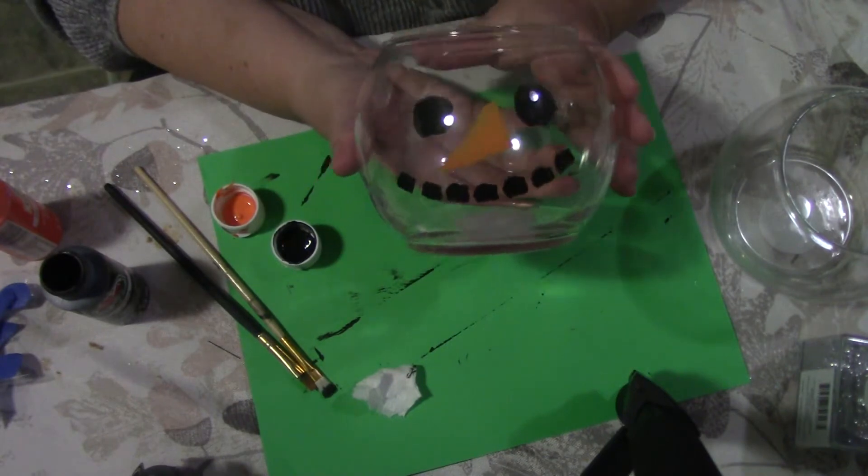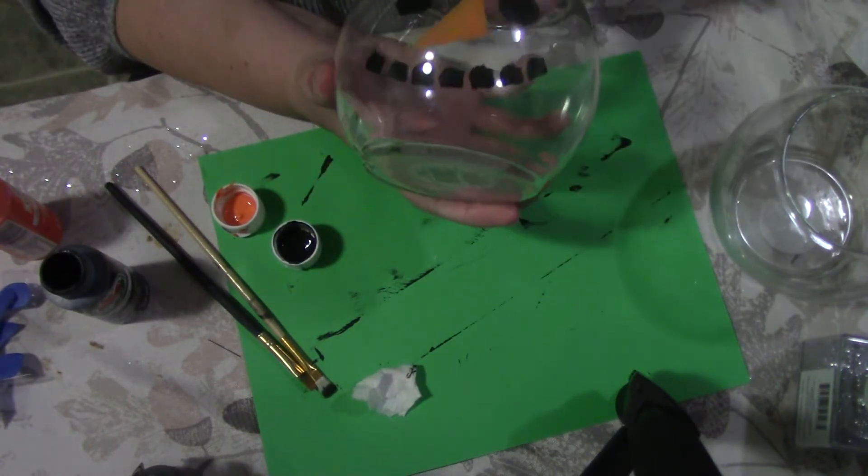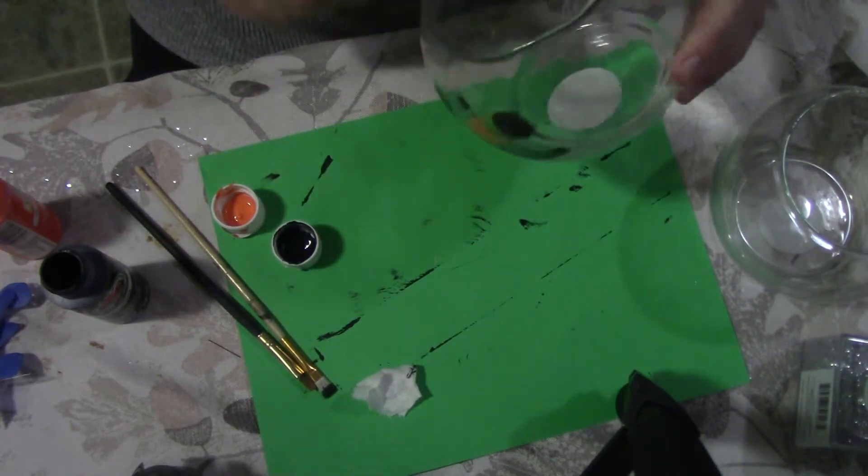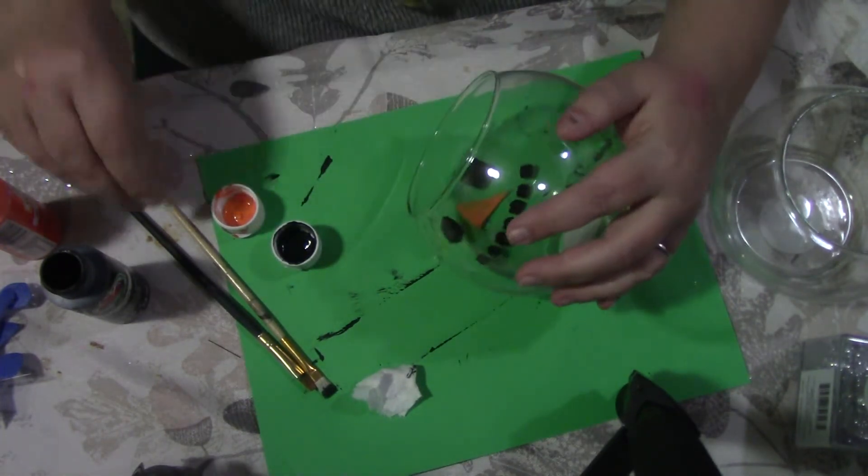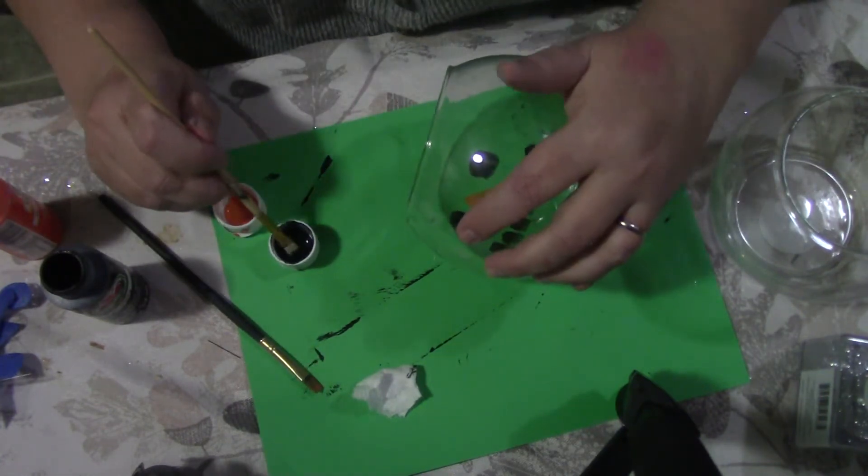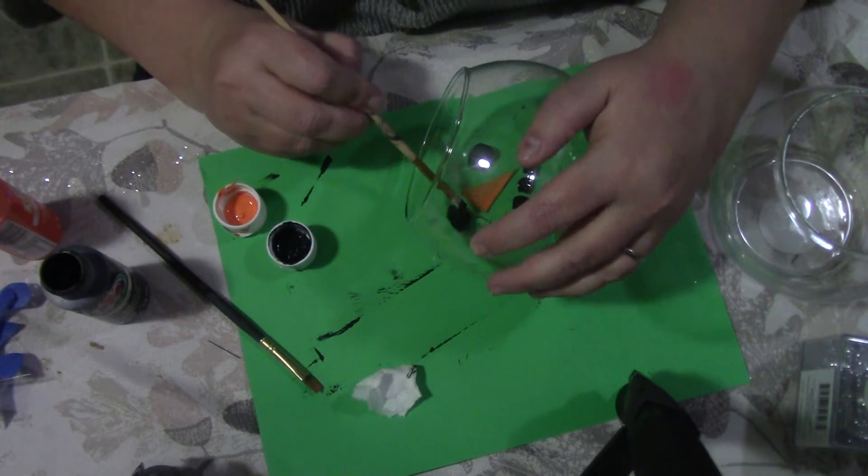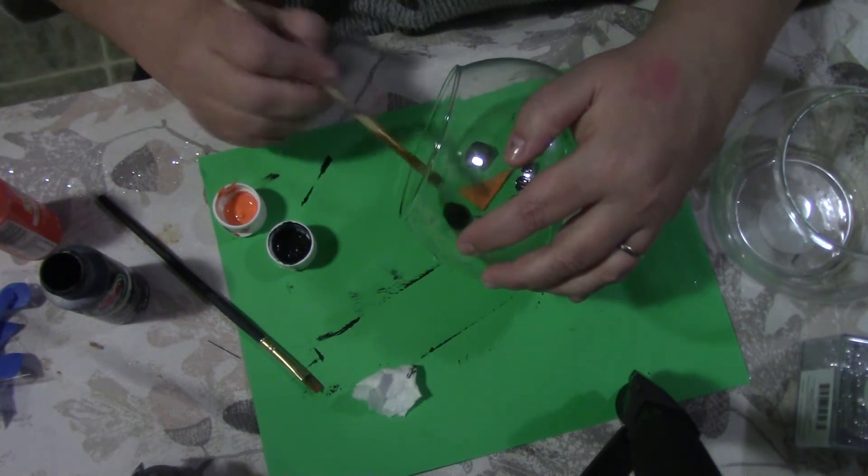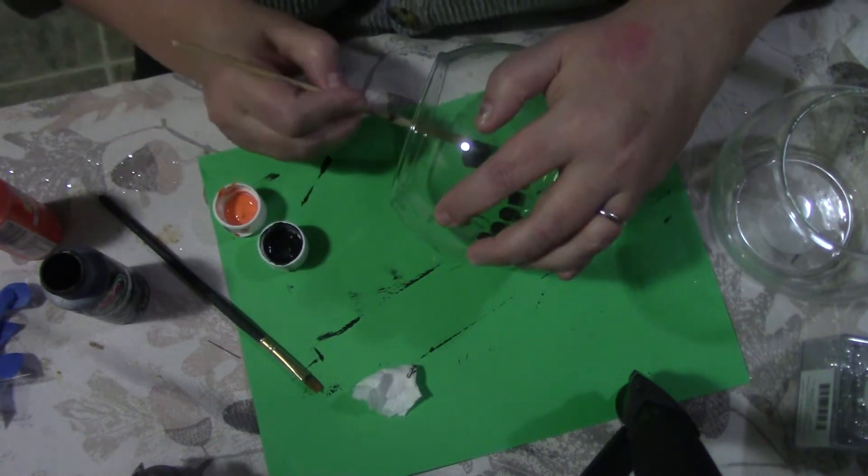All right, so there it is. Now that that's off, I can see a little bit that I need to go in and touch up just a little. We're not going to do a lot to it because it will be backed in white paint soon, so it's not going to actually be clear, but we want that black to show up as much as possible. So I'll just put a little more on.